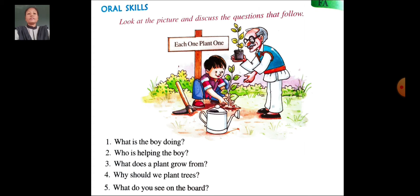First question: What is the boy doing? Look at the picture. The boy is planting a sapling. Second question: Who is helping the boy? Look at the picture. His grandfather is helping the boy.